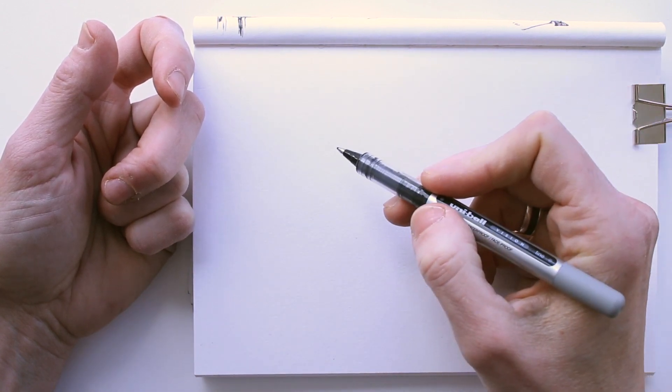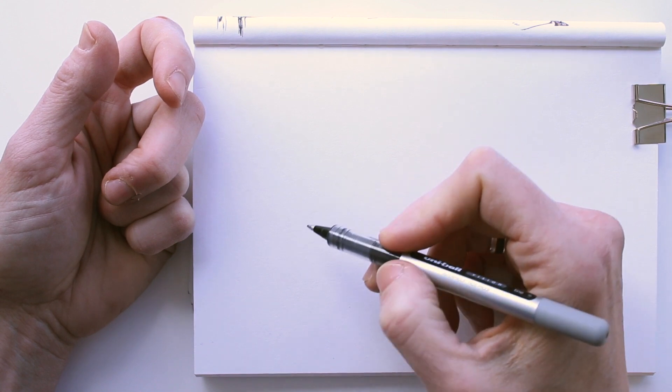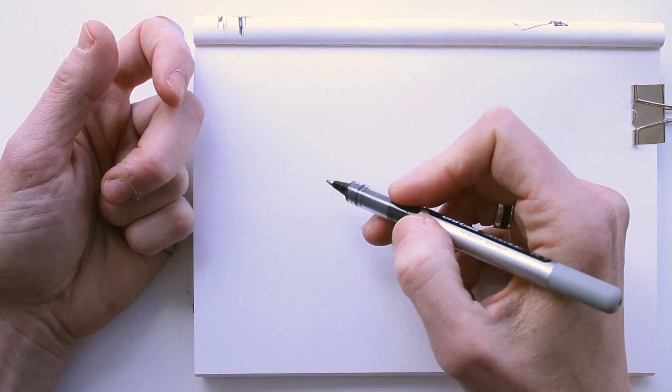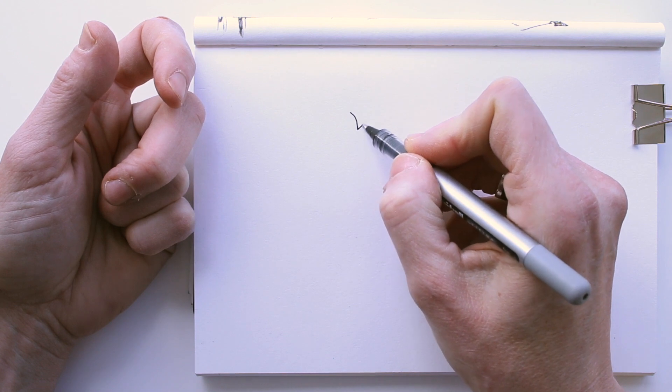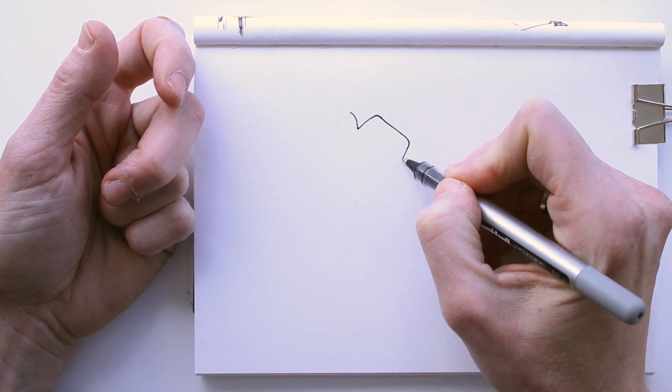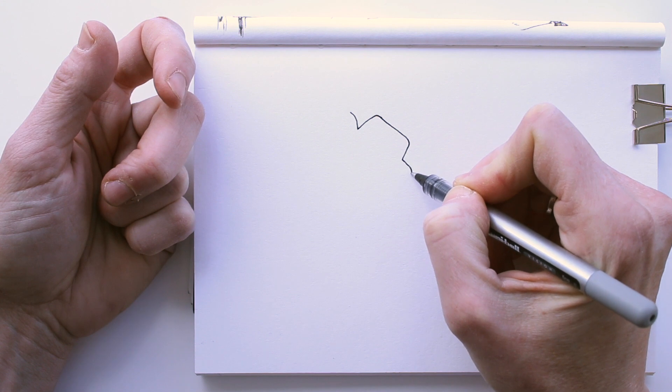First of all, we need to switch our brain off. The part of the brain that is thinking that hand looks complicated with those fingers curled up and overlapping each other, the shadows, highlights and the texture of the skin.